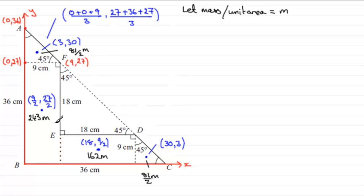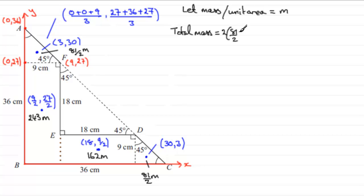Now we need the total mass, which is the sum of all individual masses. We have 2 lots of (81/2)M plus 243M plus 162M. Working that out gives a total mass of 486M.